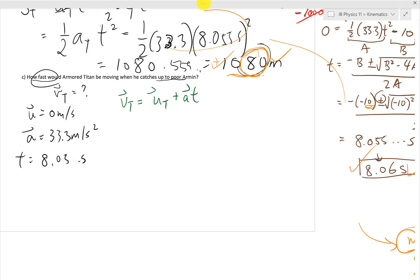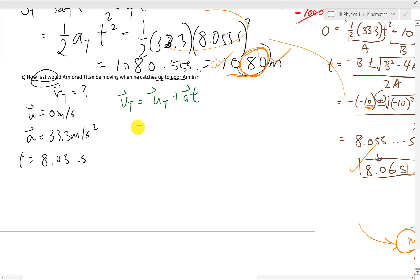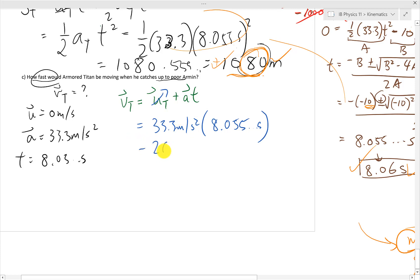And all we just have to do is substitute in all our values to give us our final velocity of our Armored Titan. Initial velocity is 0. Acceleration is 33.3 meters per second squared times the time of 8.05, etc. in seconds. Putting that all in our calculator gives us 268.26. And we're going to round that to 3 sig figs, 268 meters per second.